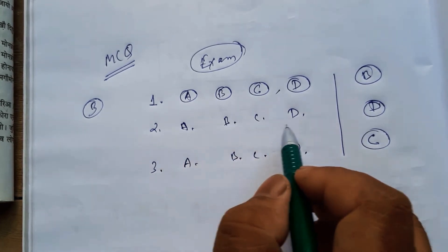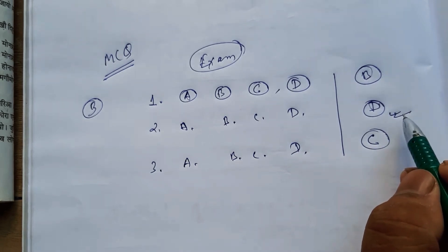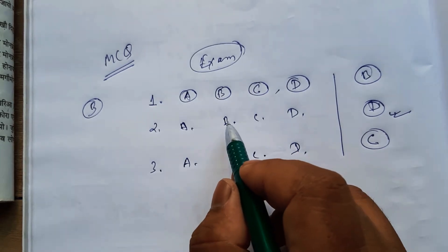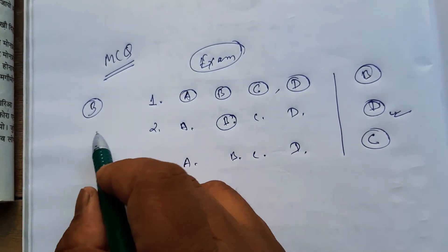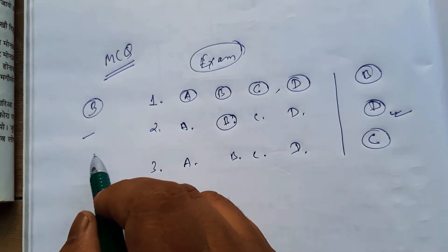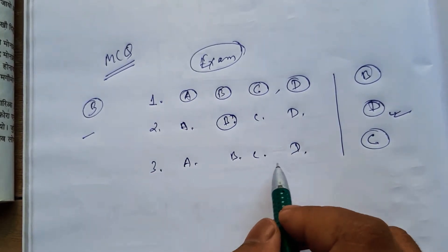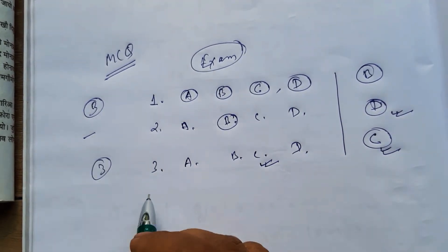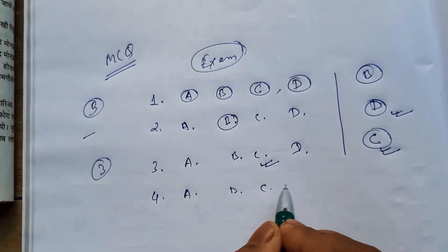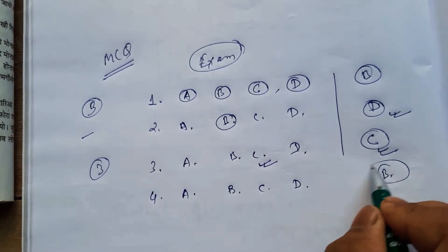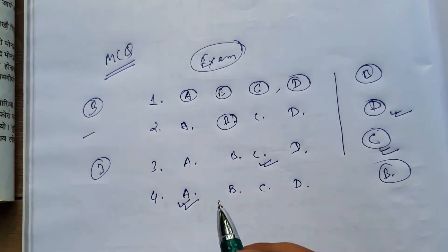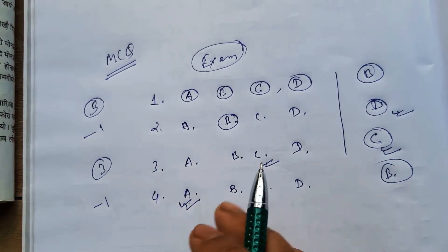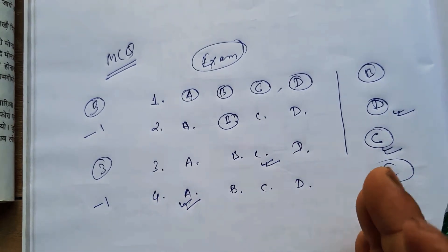In this problem there are two conditions. In the first condition, for each correct answer you get plus 3 marks, and for each wrong answer you get minus 1 mark. Under this scheme, the total score is 40.